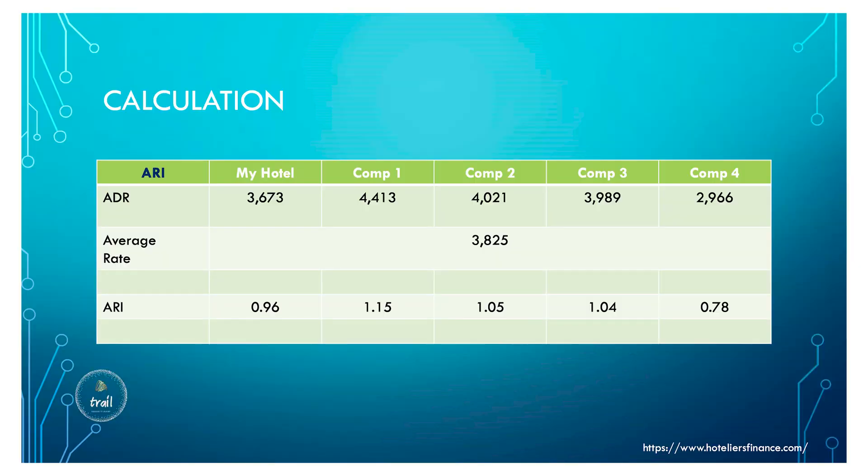The second metric is the average rate. We call it ARI — Average Rate Index. The same formula approach is used: we take the five hotels, calculate the average rate across all of them, and then divide each hotel's rate by that average.